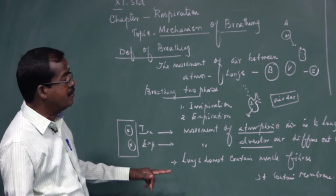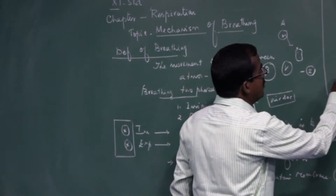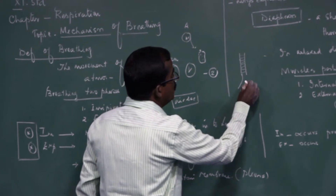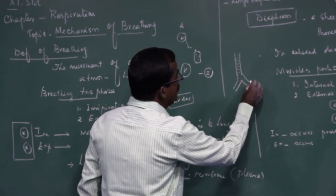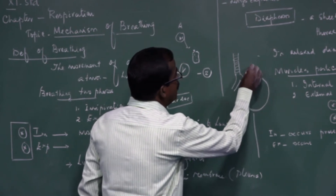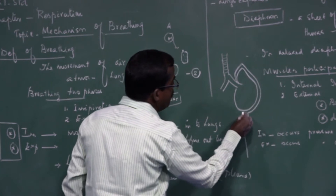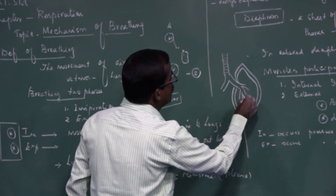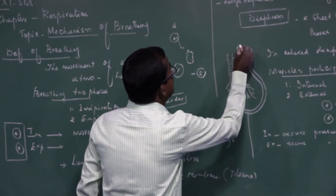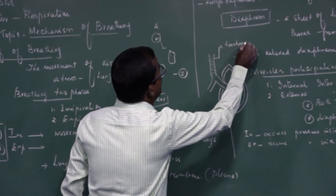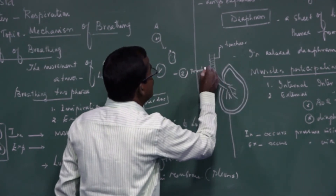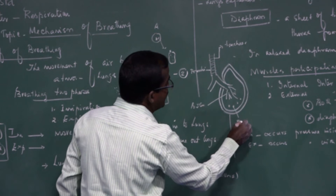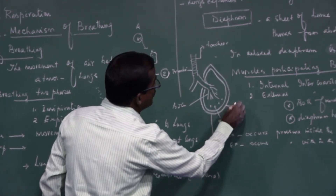I will draw the lungs diagram. The trachea is covered by cartilage and divides into two branches. It leads into bronchioles and then air sacs. The lung is covered by a double-walled membrane called the pleura.